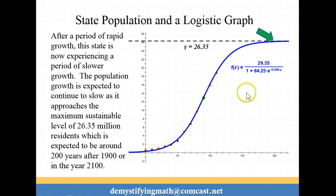So what you should notice is that after we had a period of rapid growth in here, we're now experiencing a period of slower growth here, still growing but slower. And it is expected to continue to slow as it approaches the maximum sustainable population for the state. And it looks like by the time you've reached 200 years after 1900 or the year 2100, your population will be maxed out and it should not continue to grow after that point.